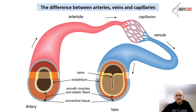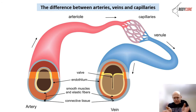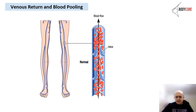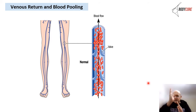We also have connective tissue. Regarding venous return and blood pooling: blood comes into the vein and travels up through a valve, as we discussed before. Blood comes up and the valve snaps shut to stop blood flowing backwards.